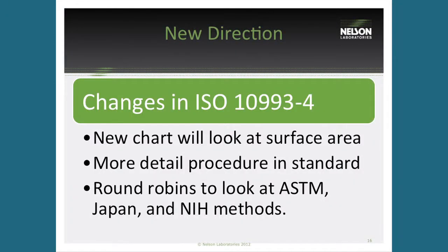This helps things like stents and other small devices that might not have to do as much hemocompatibility testing as they currently do. The other thing we're looking at in the standard is getting more detail in the test procedure itself, especially regarding hemolysis. There are currently three methods for hemolysis that labs can follow: an ASTM method, an NIH method, and a Japanese method. The question is how do those methods compare to one another.